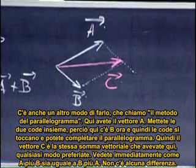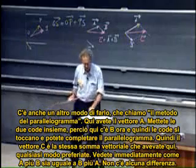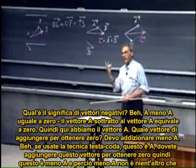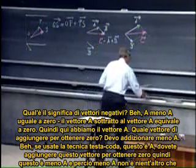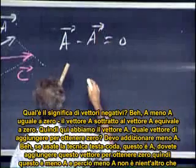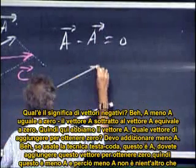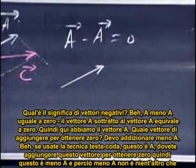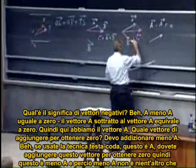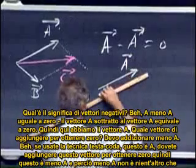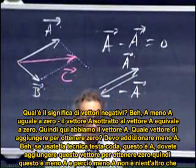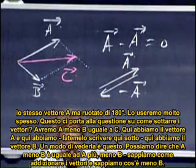You can see immediately that A plus B is the same as B plus A — there is no difference. As for the meaning of a negative vector: A minus A equals zero. So which vector do I add to A to get zero? I have to add minus A. Using the head-tail technique, minus A is the same as A but flipped over 180 degrees. We will use that very often.